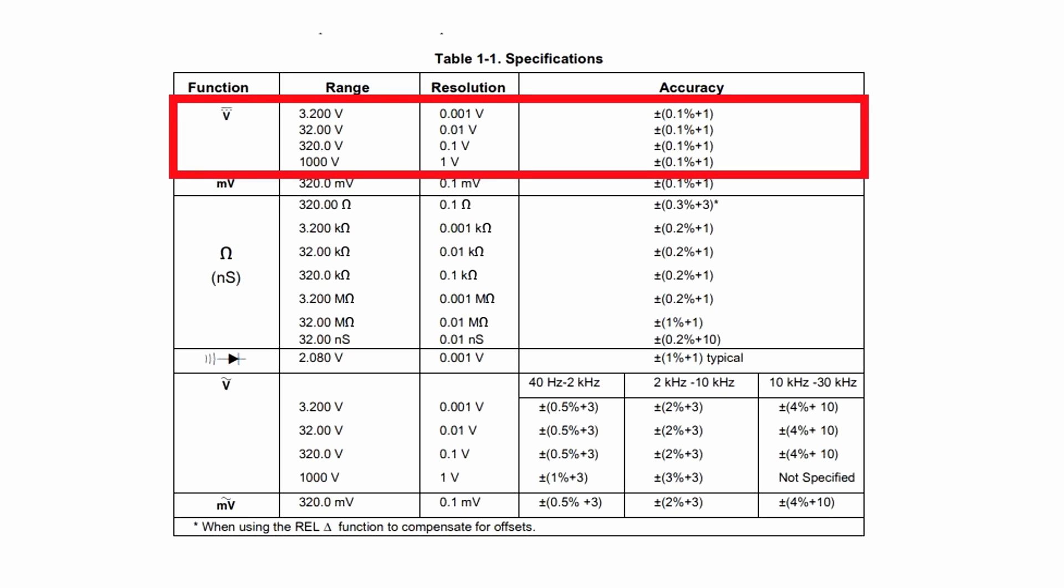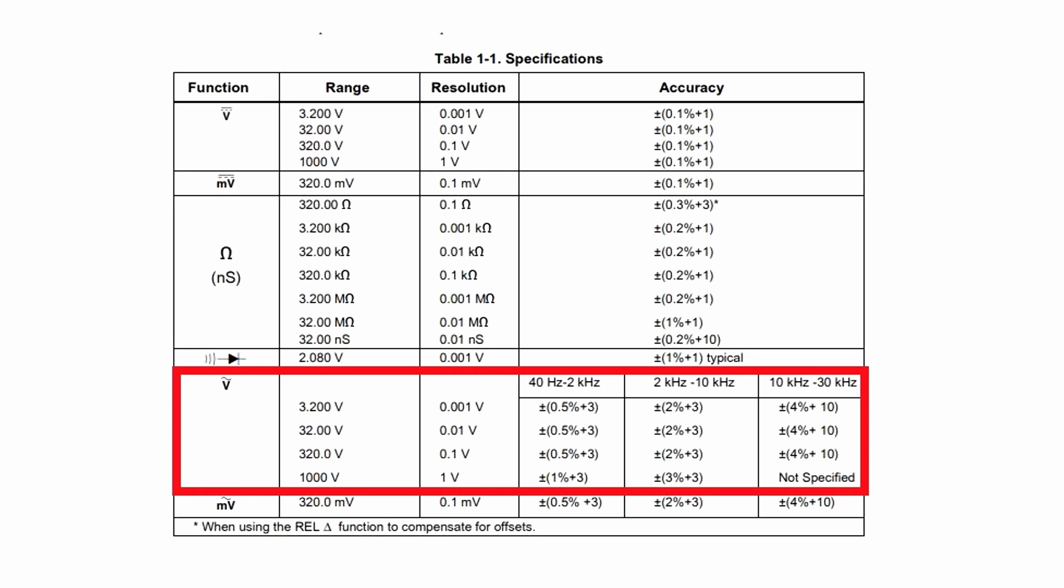The multimeter measures direct voltage up to 1000 volts. The basic error is only 0.1%. Alternating voltage also measures up to 1000 volts, but there the interesting thing begins.